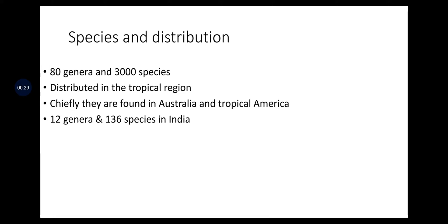Species and distribution: the Myrtaceae has 80 genera and 3,000 species distributed in tropical regions, chiefly found in Australia and tropical America. 12 genera and 136 species are found in India.